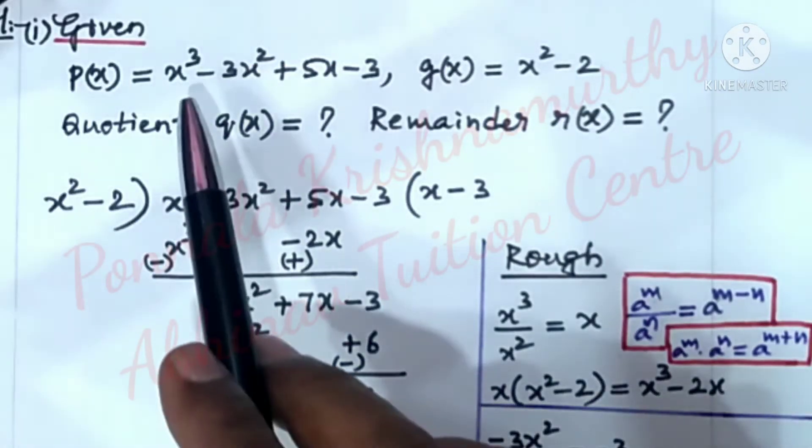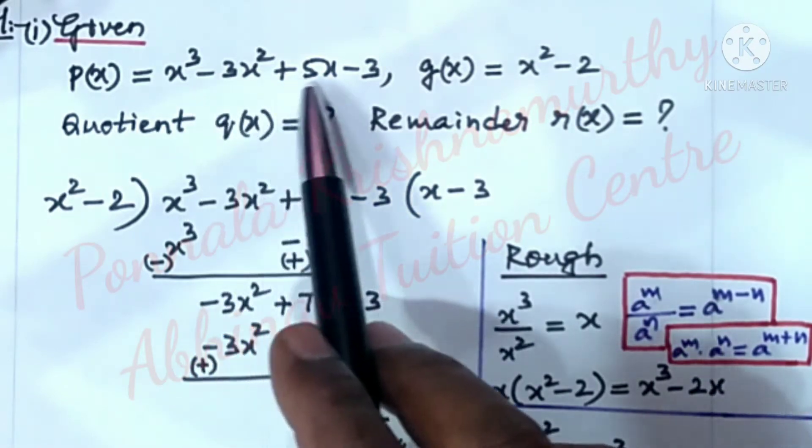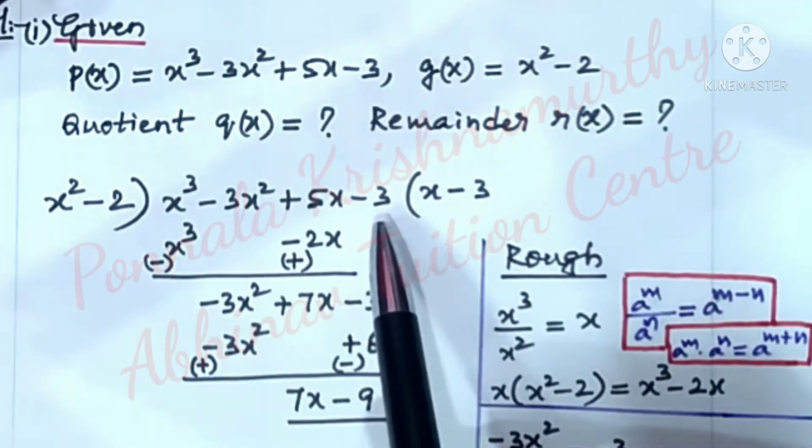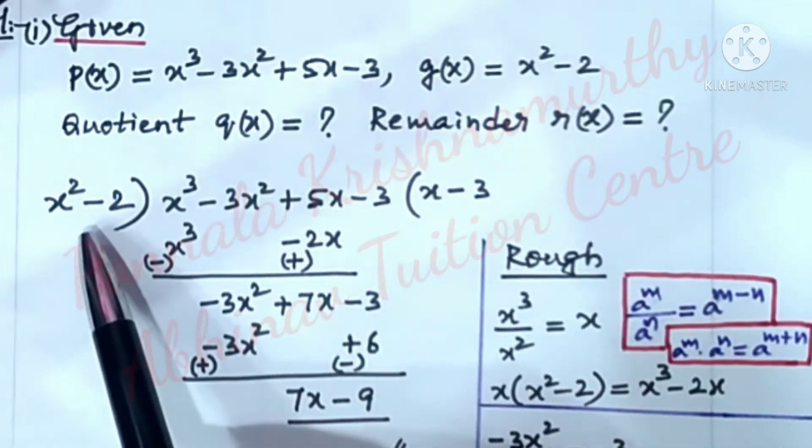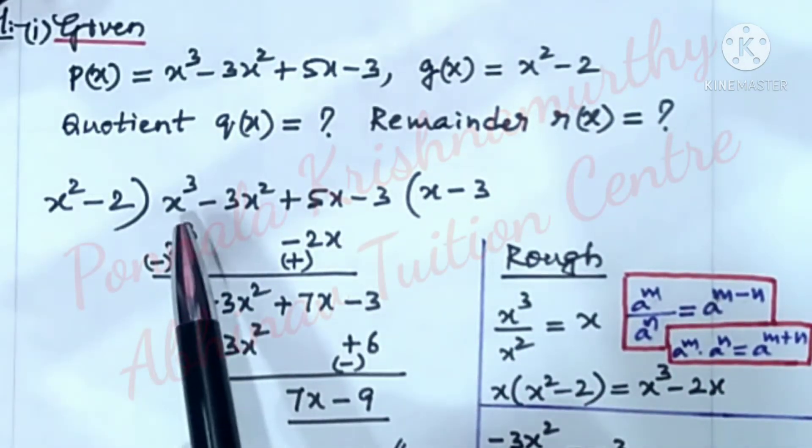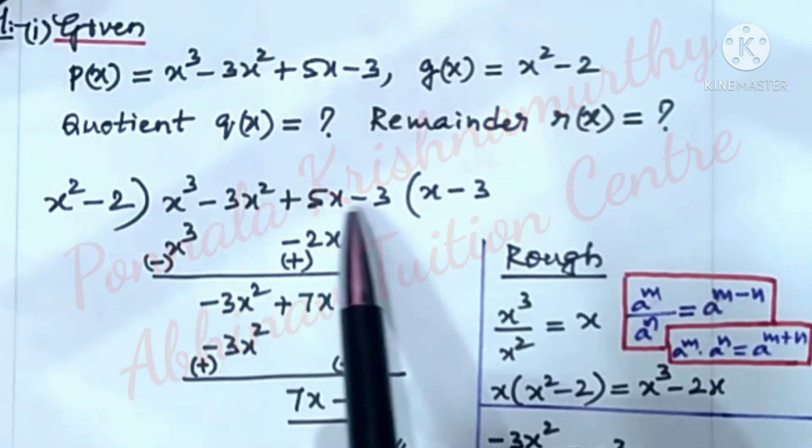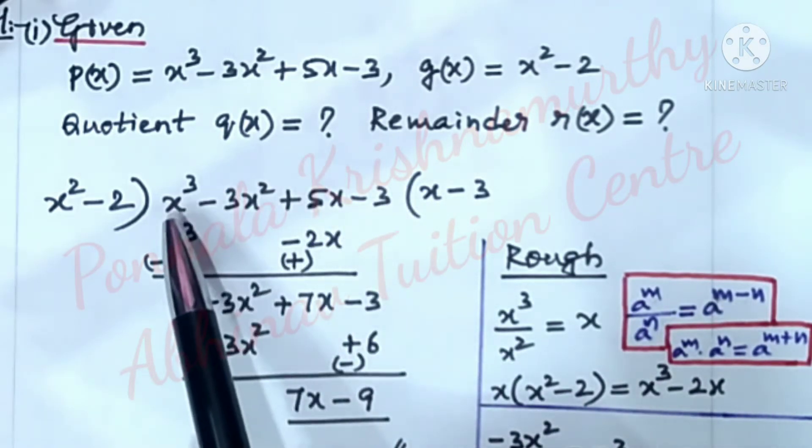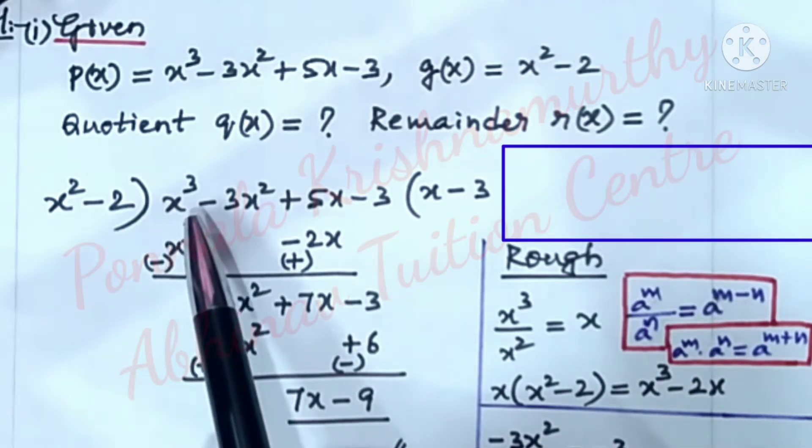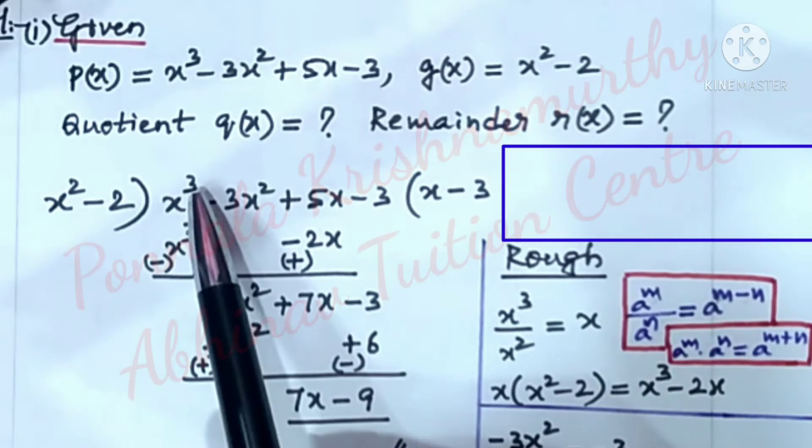Now we have to divide this x³ - 3x² + 5x - 3 by x² - 2. First, this expression must be in order. That means in the decreasing order of the powers.